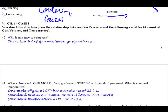Okay, let's do the last question on this page. It says, you should be able to explain the relationship between gas pressure and the following variables. First question, why is it easy to compress gas? Because there's lots of space between particles. If here's one particle, the next closest particle is 10 of these, that's that distance away.